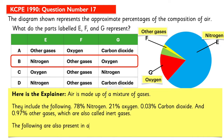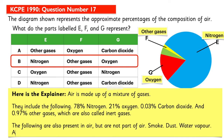The following are also present in air but are not considered part of air: smoke, dust, water vapor, and pollutant gases such as sulfur dioxide.